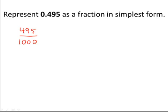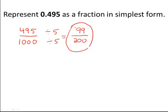Now all we need to do is reduce this fraction by finding a number that goes into both 495 and 1000. For this fraction, we can divide both the numerator and denominator by 5. 495 divided by 5 gives us 99. 1000 divided by 5 gives us 200. So the answer is 99 over 200.